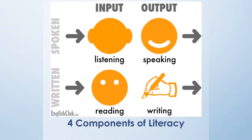When we think about literacy, we divide it into four components: listening, speaking, reading, and writing. Those four components get divided into two categories — input and output. The input skills are the receptive skills: while you're required to understand reading, you're not required to write; while you're required to understand what someone is saying, you're not required to produce speech. However, the output skills are the most difficult because they require that you understand the rules of language before you use them.